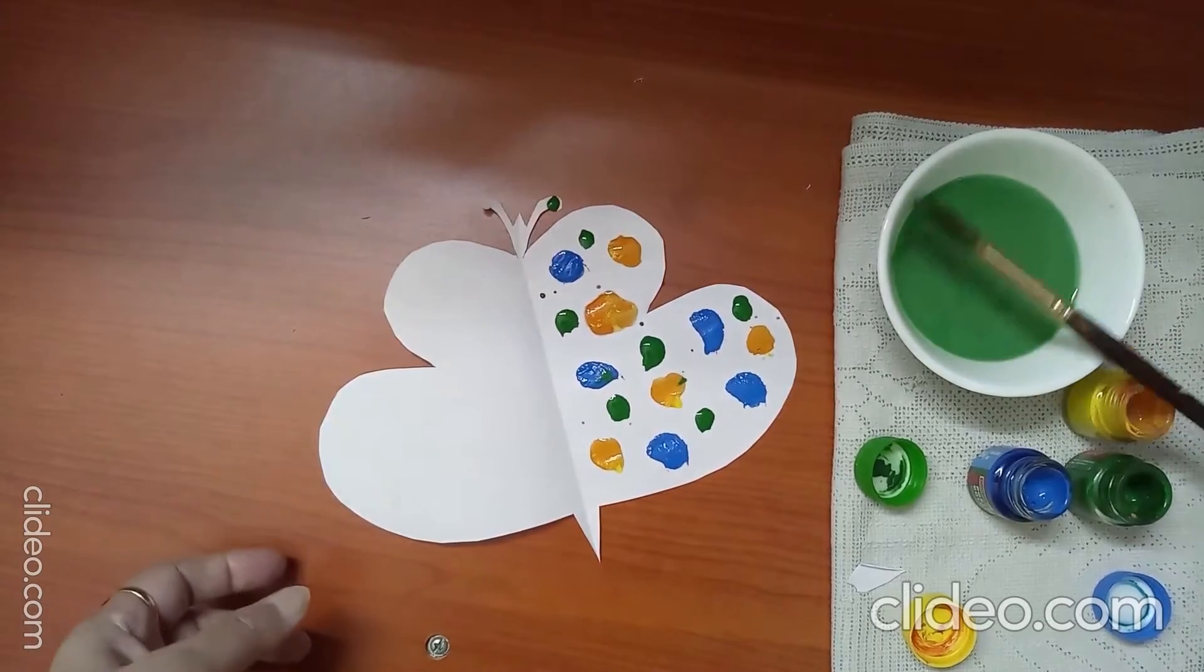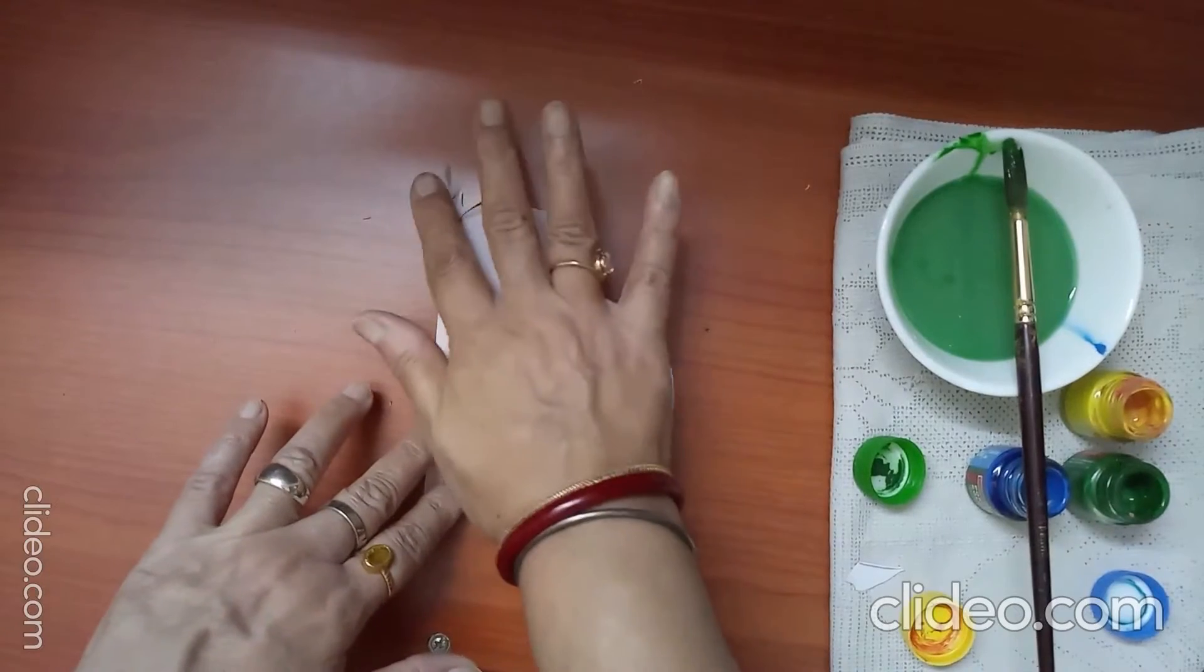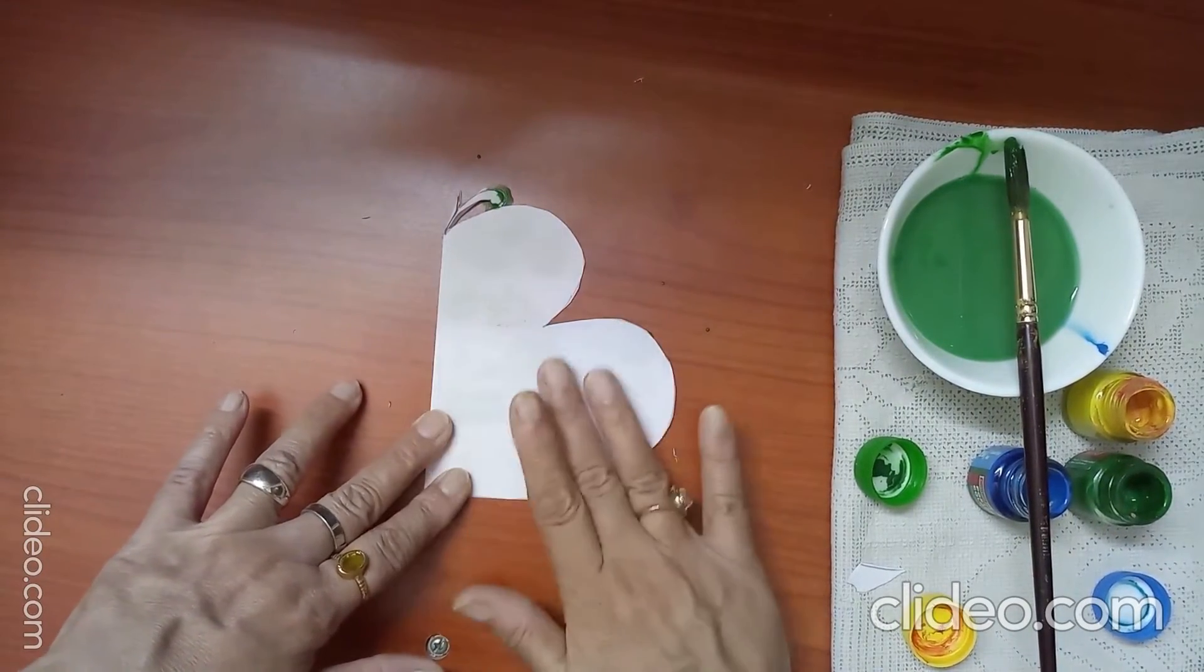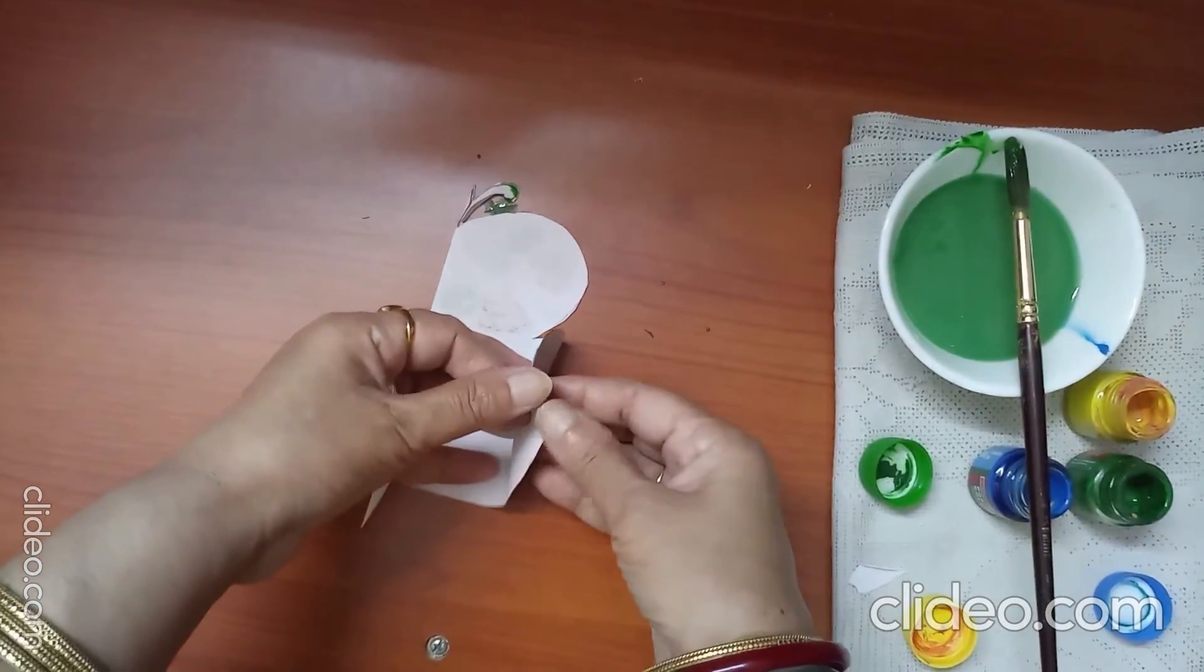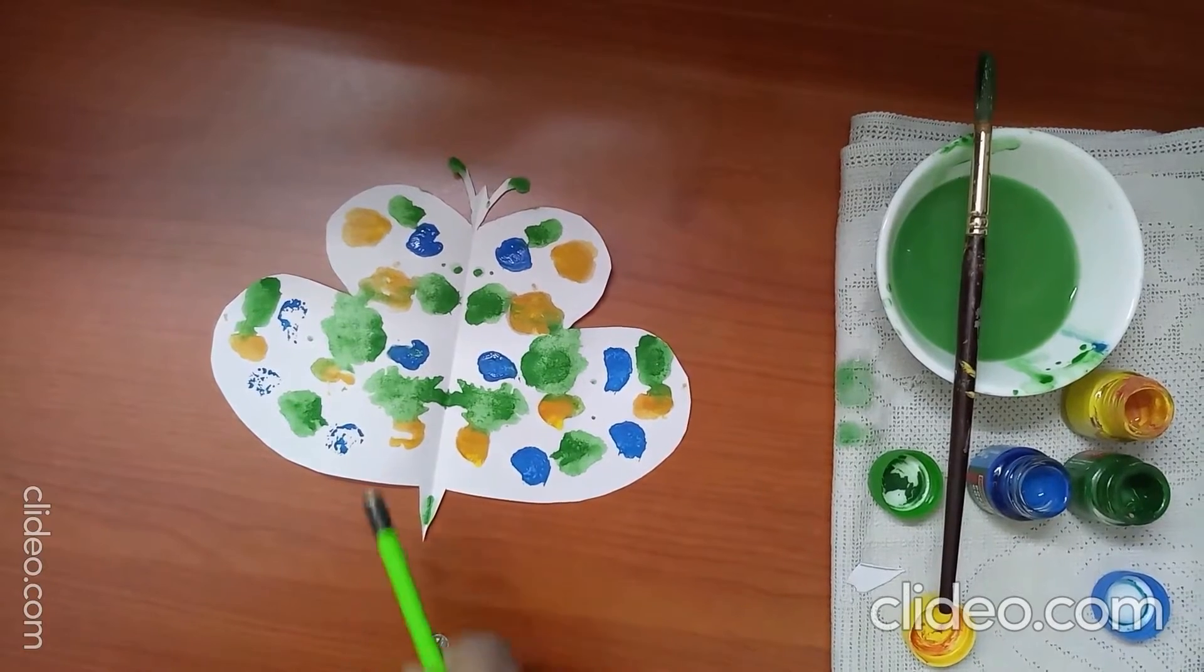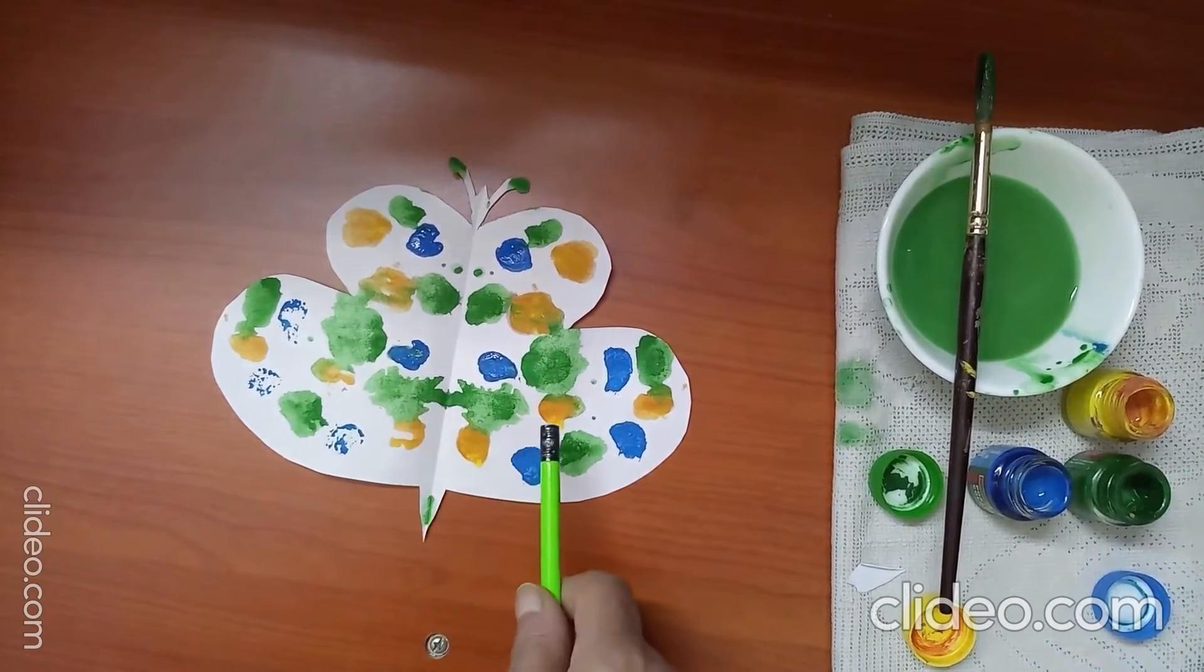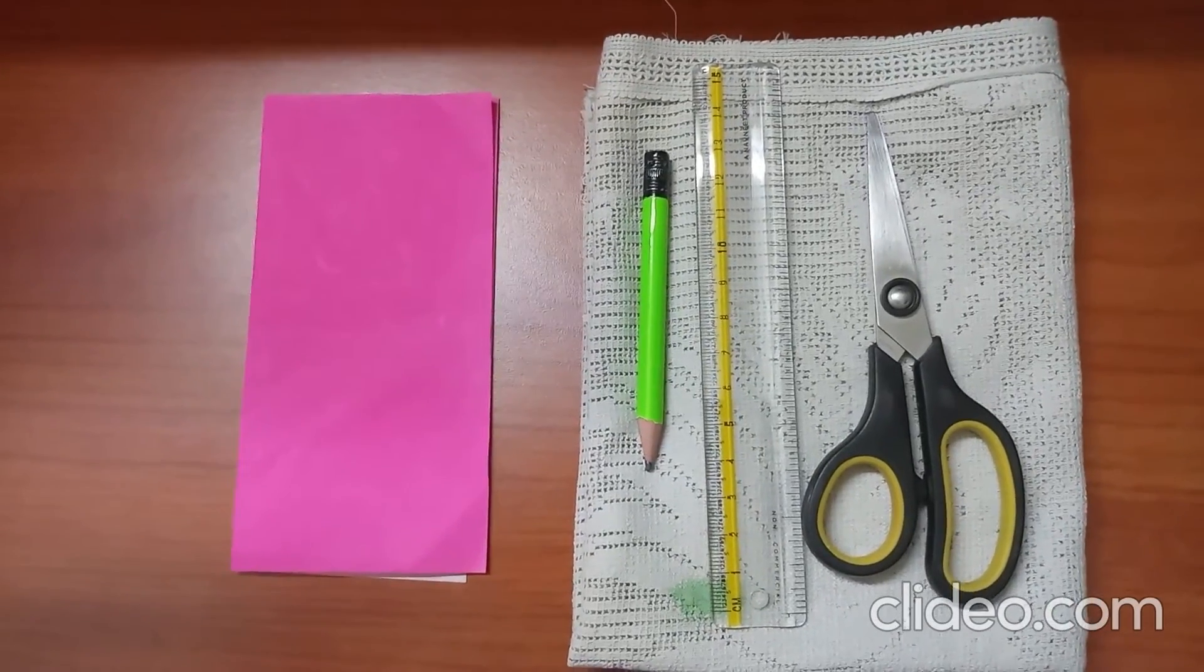Now fold it and press it. Now when you open, you see a beautiful butterfly which is symmetrical in shape, means both sides are same. Now we will draw some more symmetrical figures.